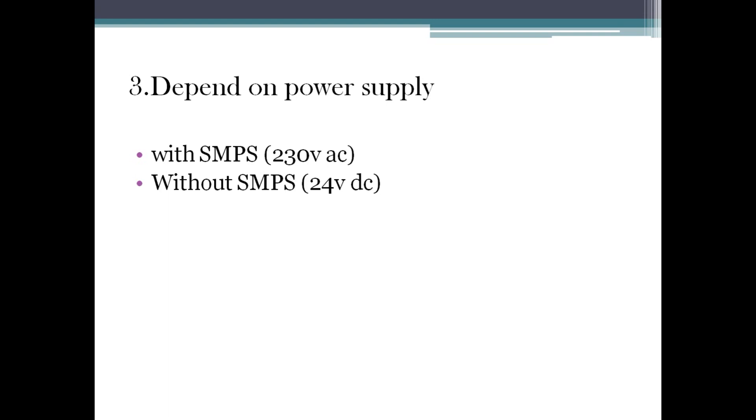Suppose if you are giving 230V directly to the PLC, that means the PLC is having SMPS component inside. PLC can work with 24 volt only, but in some PLCs you can give 230V also because it can convert 230V to 24V because it has SMPS inside. It's not visible from outside - if you open PLC you can see. That is with the SMPS PLC.